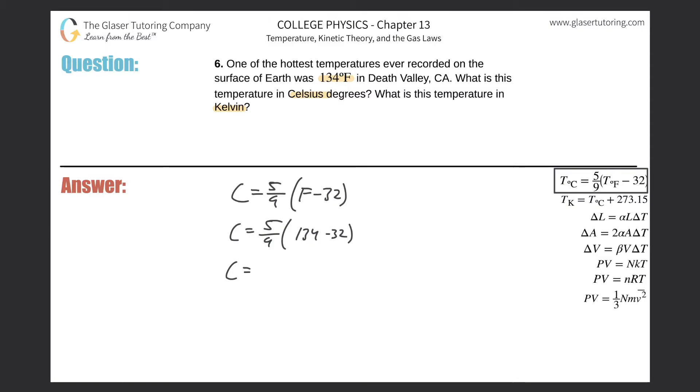So you get a value of about 56 or 57 degrees. So there's going to be about 57 degrees Celsius.